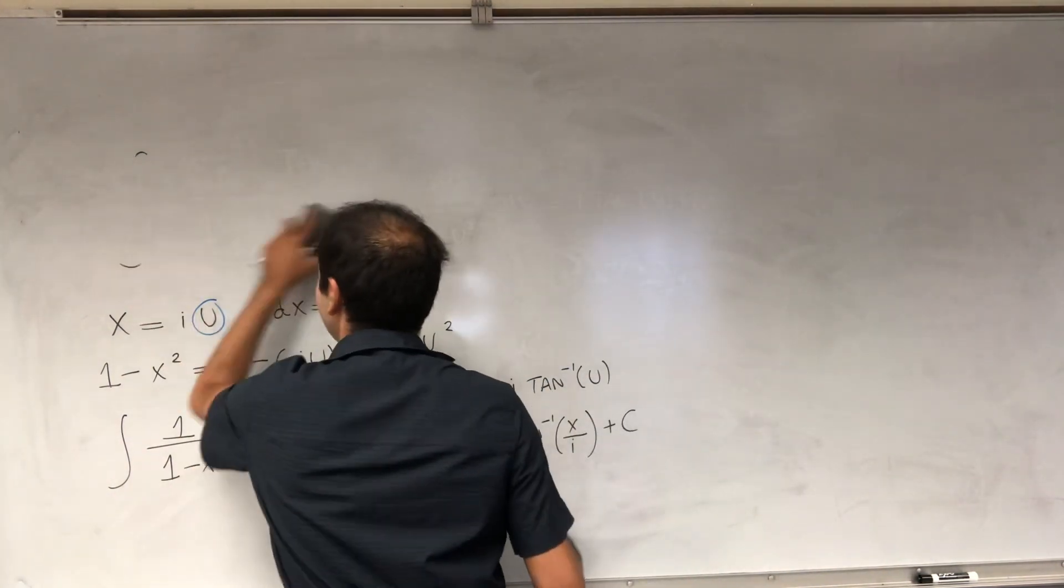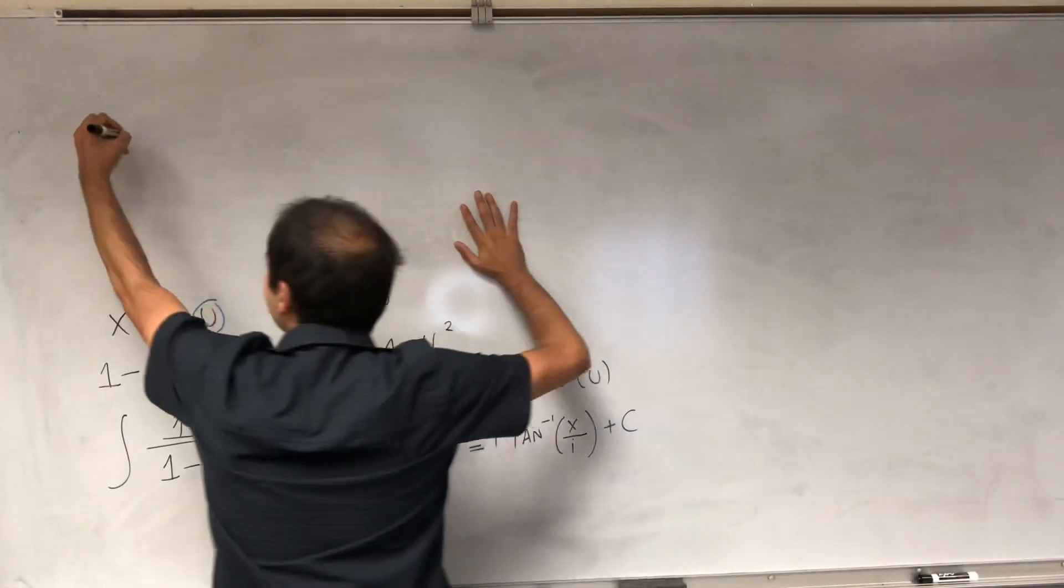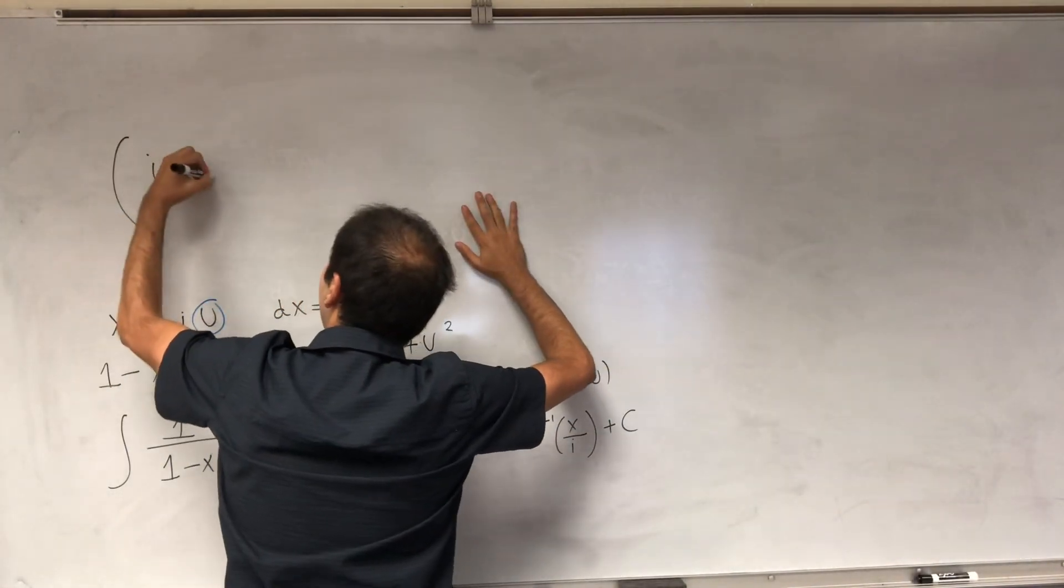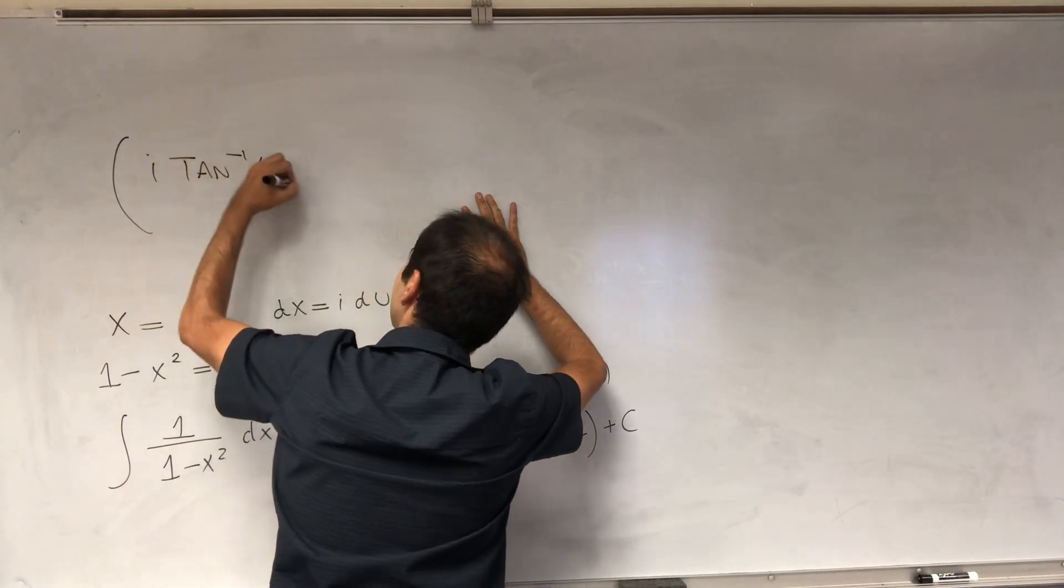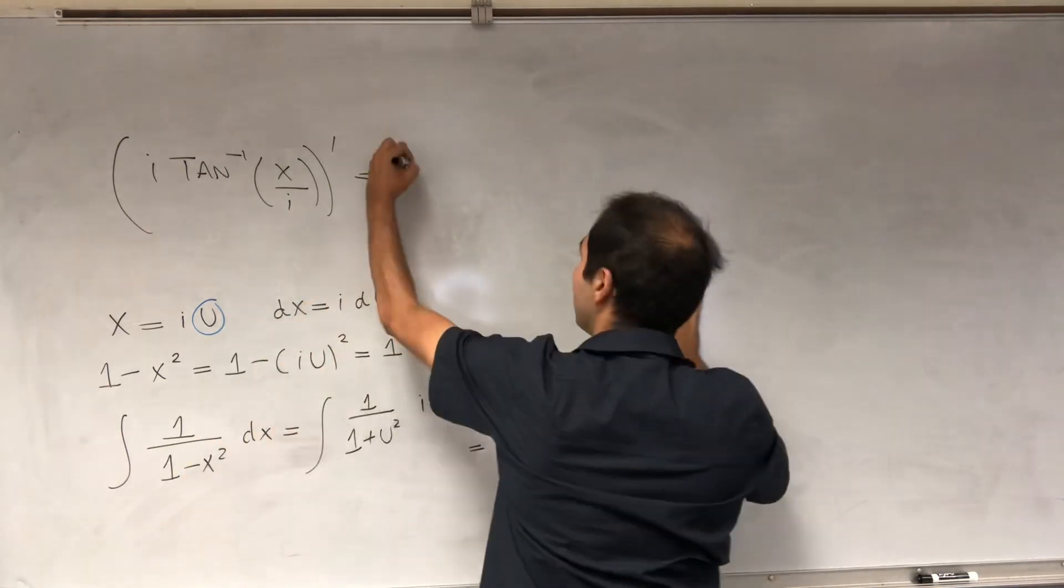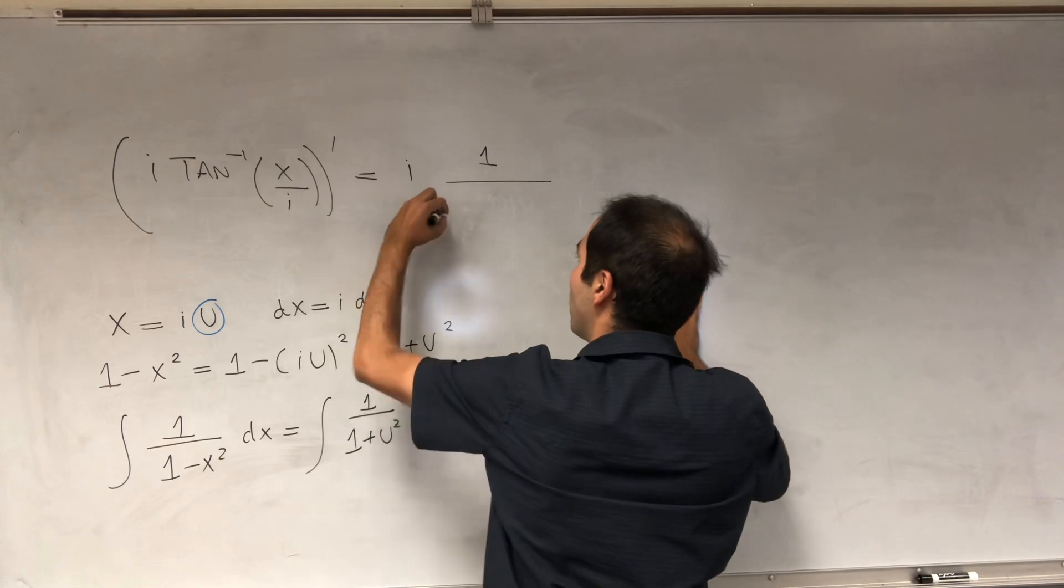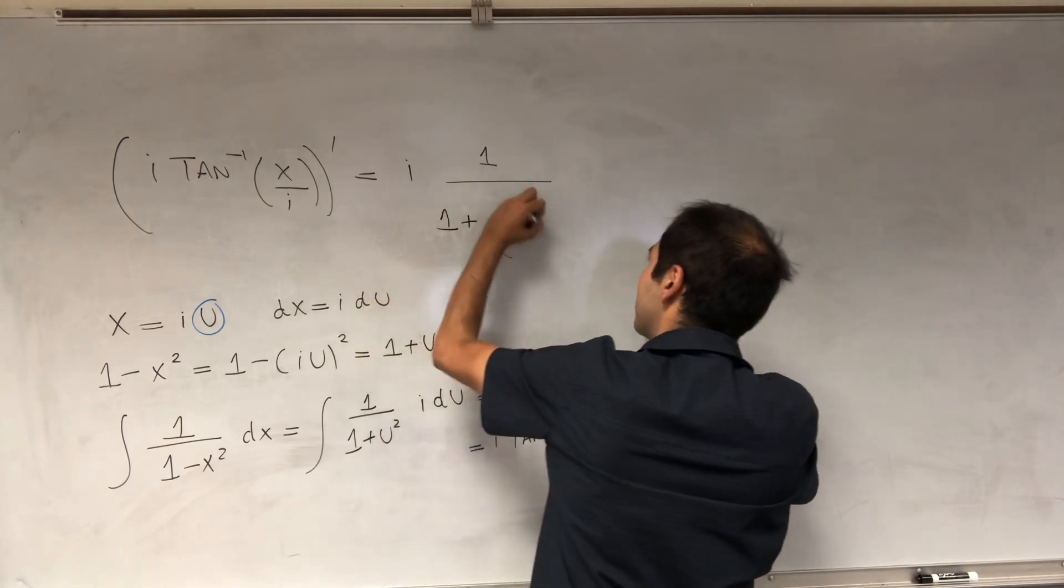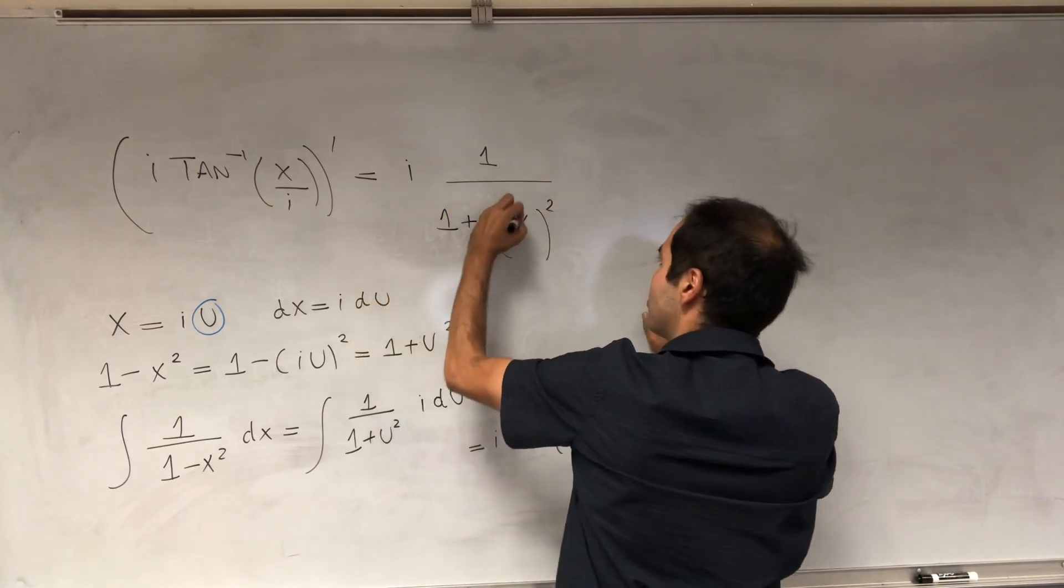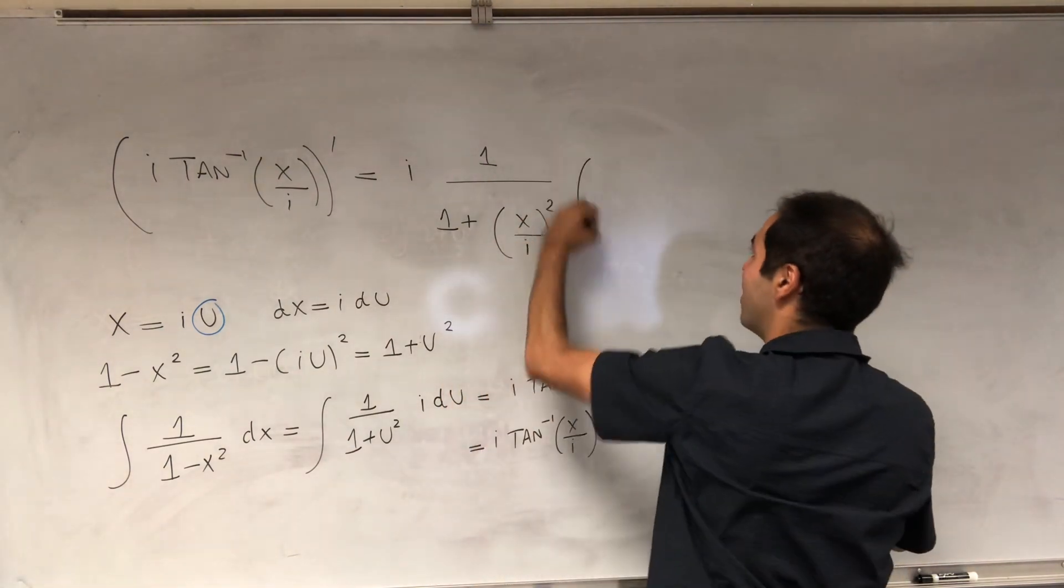So let's try to differentiate i arctangent of x over i and see what that gives us. i arctangent of x over i prime. So that becomes, we have this i, and then derivative of arctangent is 1 over 1 plus blah squared times x over i. And then using the chain rule, we get times 1 over i.